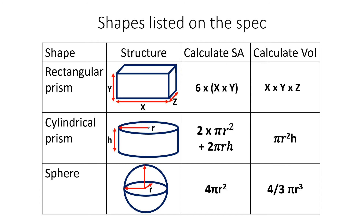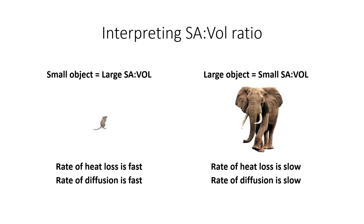You need to be able to calculate the surface area and volume of specific shapes. They may give you the formula in the exam, but I suggest you learn those calculations off by heart. When interpreting surface area to volume ratio data, my suggestion is to work out the calculation and values first, then do the interpretation completely separately, and then tie them together.